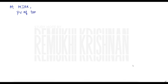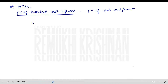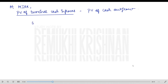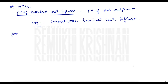At modified internal rate of return, the formula is: present value of terminal cash inflows equals present value of cash outflow. One important note — whenever you are doing a sum in your examination, always write the formulas first. Step one is to compute the terminal value.